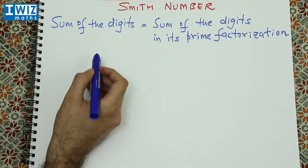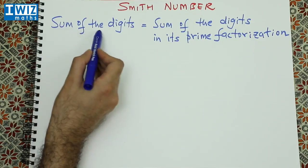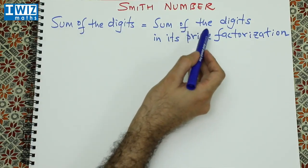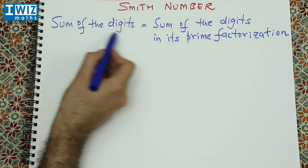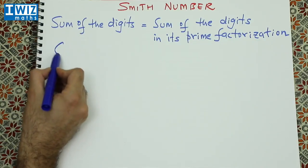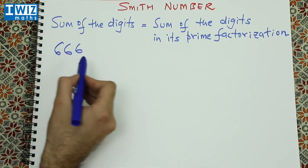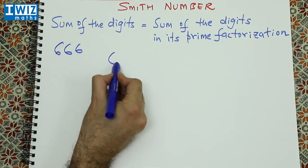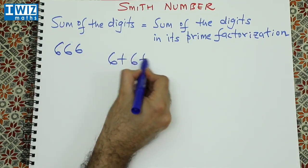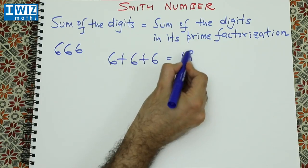A Smith number is where the sum of the digits is equal to the sum of the digits in its prime factorization. So let's start off with the sum of the digits. The number 666: if you sum the digits, that is just 6 plus 6 plus 6, which is 18.